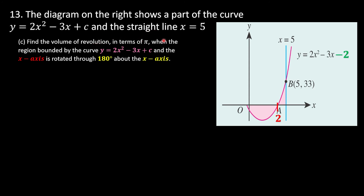Part c asks for the volume of revolution in terms of π. The region is bounded by the curve and the x-axis. The curve spans from x = -1/2 to x = 2, rotating about the x-axis. When rotating about the x-axis, the radius is y, giving π∫y² dx.